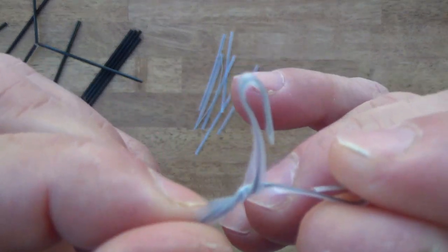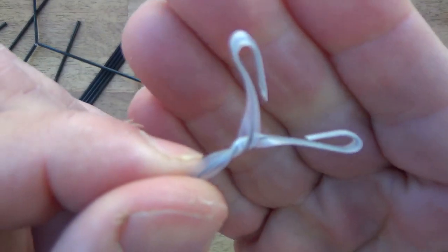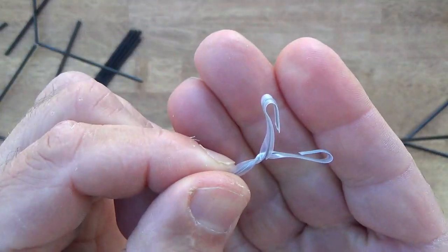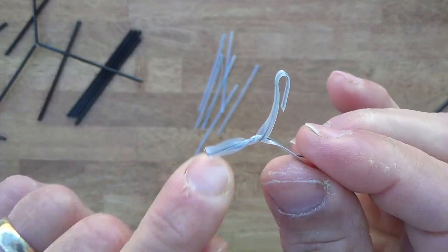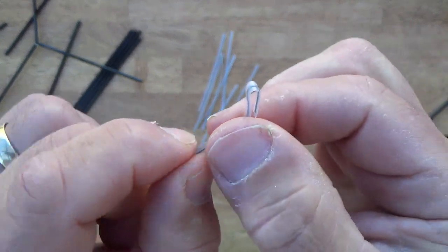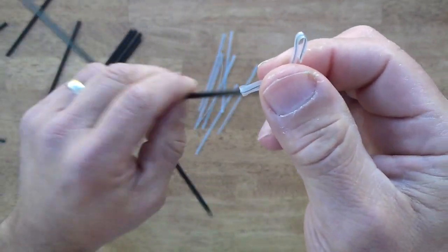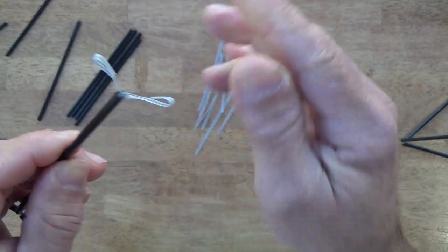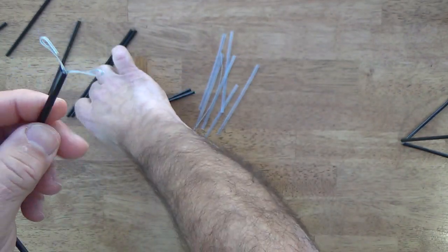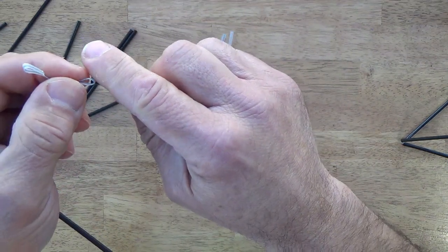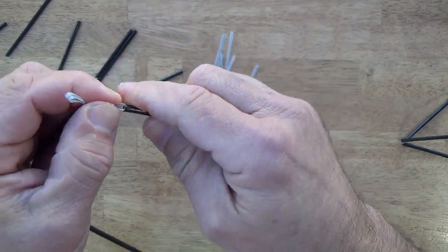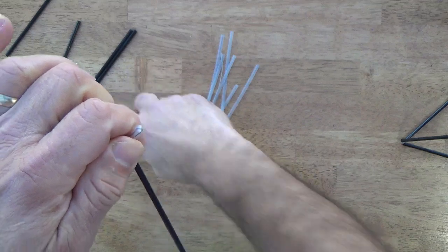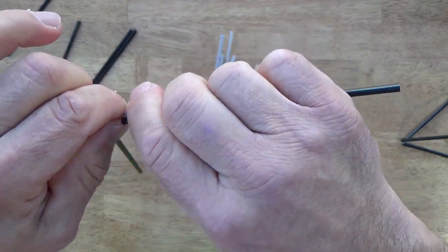So you end up with three doubled over ends, and I can now just continue building on the other side here. I'm about half done with a tetrahedron, just to give you an idea.